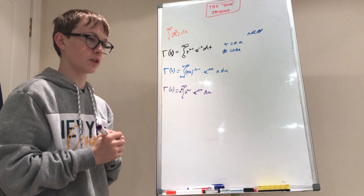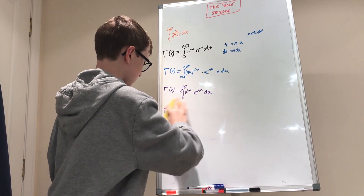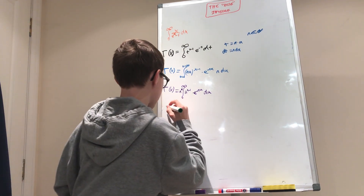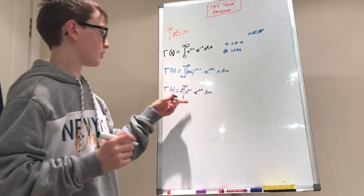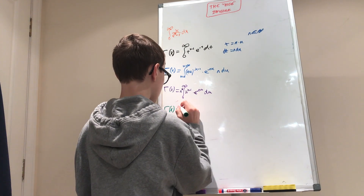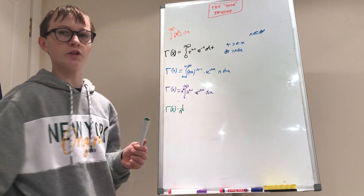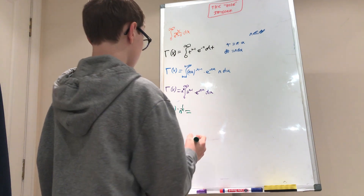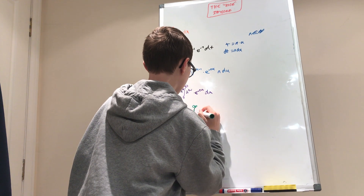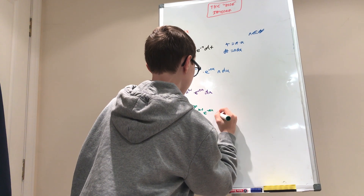And now dividing both sides by n to the x — dividing by n to the power of x is the same as multiplying by 1 over n to the power of x. And because I already said we'll be using the zeta function later on, this should start to look a bit familiar. This equals the integral between 0 and infinity of u to the power of x minus 1 times e to the negative nu du.